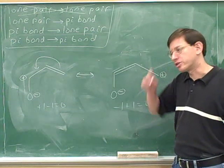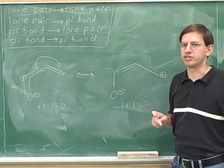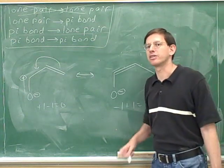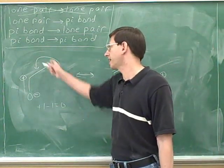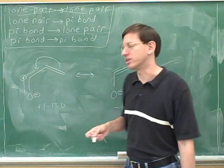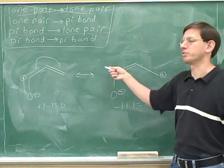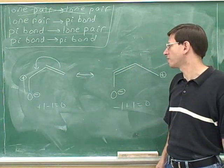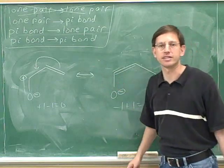Remember that we're not trying to draw all the possible resonance structures here — we're just drawing the one resonance structure indicated by the electron-pushing arrow given. There are other resonance structures we could draw for this molecule, but we're not going to bother doing that at this time.